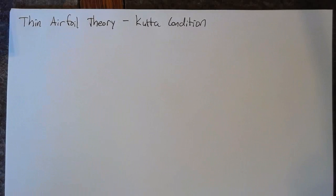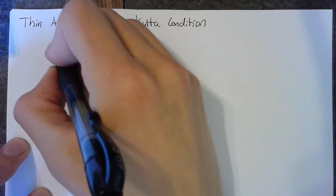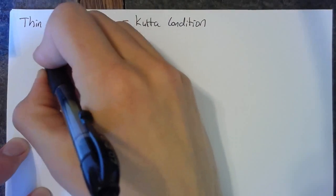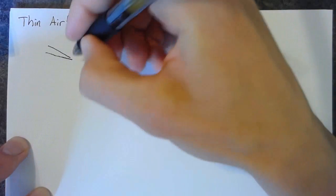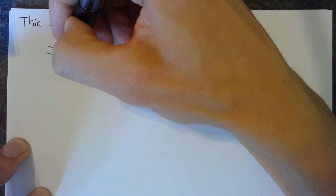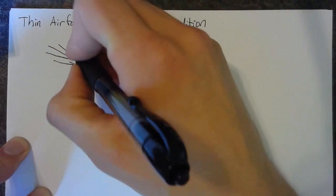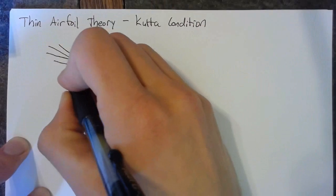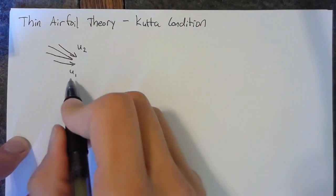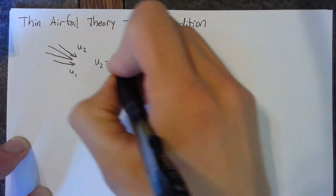Howdy. In this lesson, I'm going to be going over the Kutta condition and how it applies to thin airfoil theory. If you remember, the Kutta condition stated that for any airfoil at the trailing edge, the velocity on the top and bottom surfaces, which we'll call U2 and U1, should be equivalent. So U2 is equal to U1.